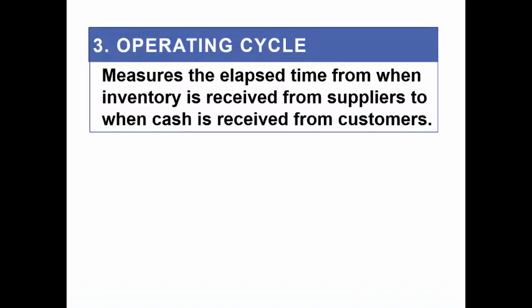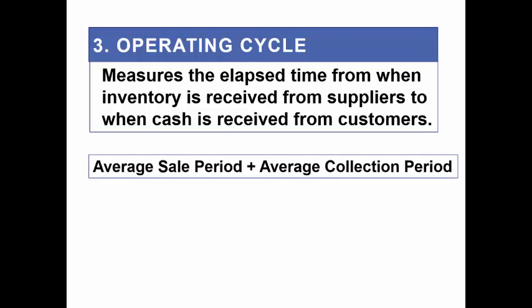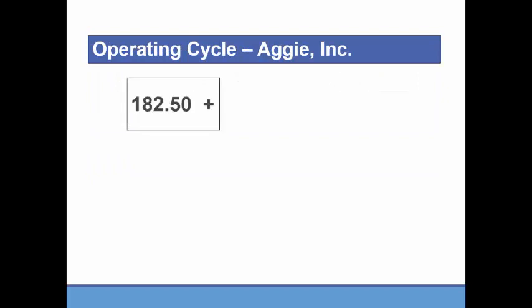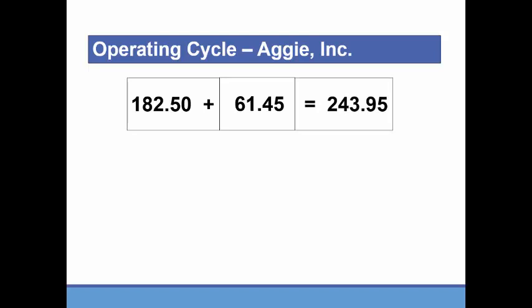Next, we'll look at the operating cycle — measuring how long it takes from the time we receive inventory to when we convert it to cash. We get the inventory, sell it, then collect the money. You compute it by taking the average sale period plus the average collection period. For Aggie Inc., the average time to sell inventory was 182.5 days, and it took 61.45 days to collect, so the operating cycle is 243.95 days.